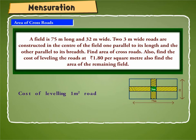Now, cost of leveling 1 square meter road is equal to Rs. 1.80. Cost of leveling 312 square meter road is equal to Rs. 312 into 1.80 or Rs. 561.60.